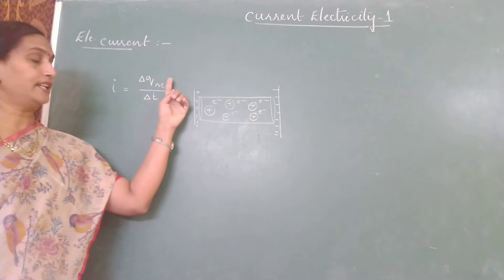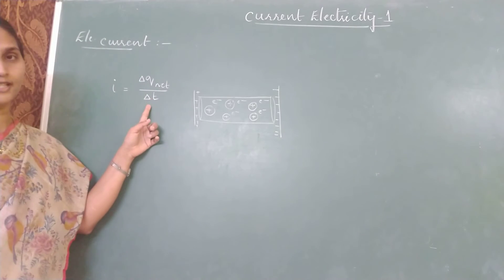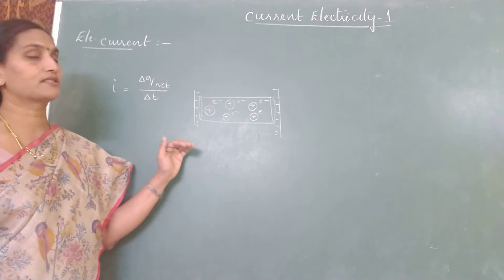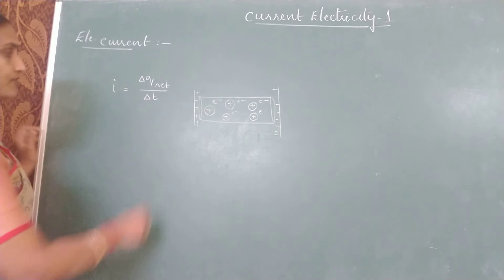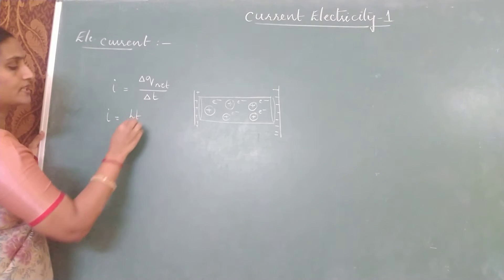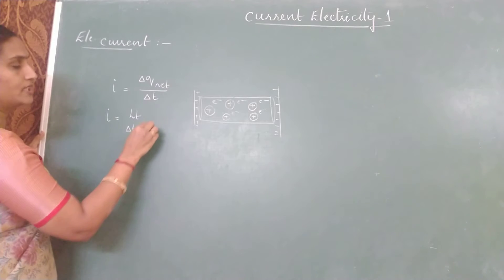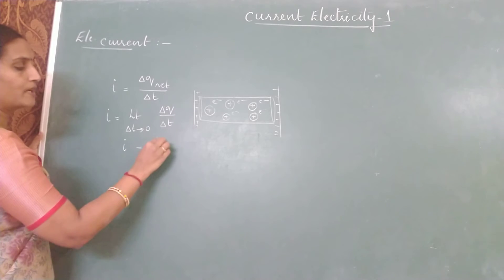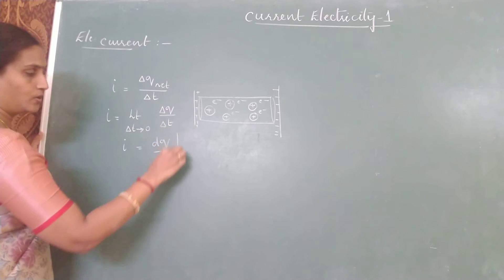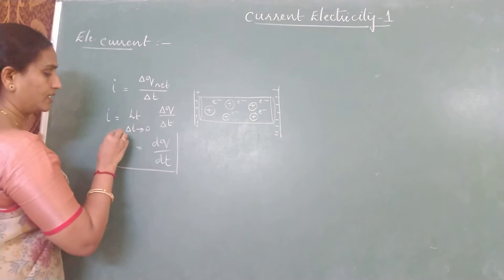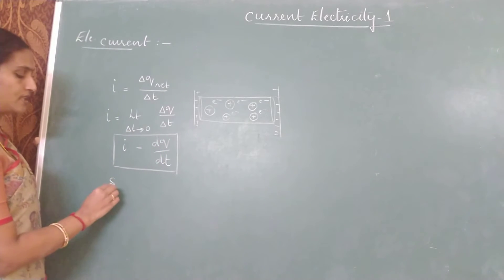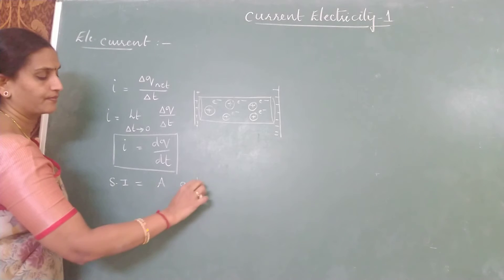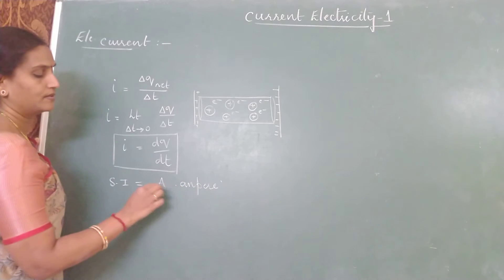So how do we define current? The net charge transferred per unit time across the cross section of the conductor when subjected to an external potential difference. If delta T tends to zero, we can write this as dQ/dT. Coming to its SI unit, current is a fundamental quantity; the SI unit is ampere, represented by the letter A. The dimensional formula is written as capital A, and it is a scalar quantity.